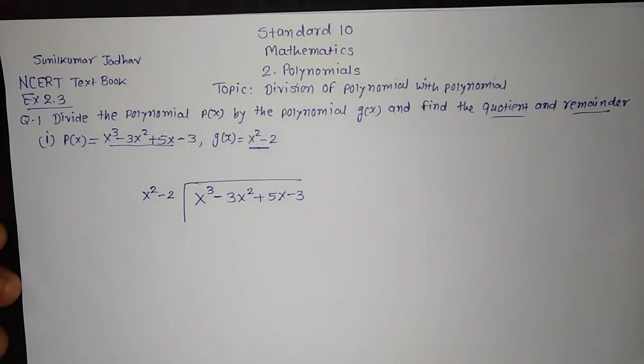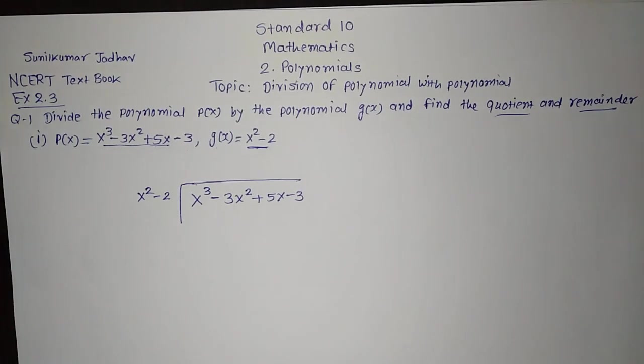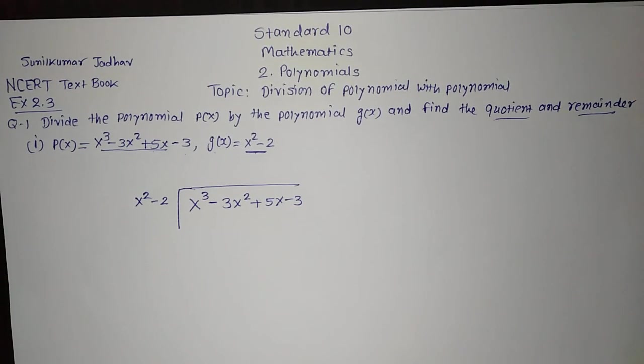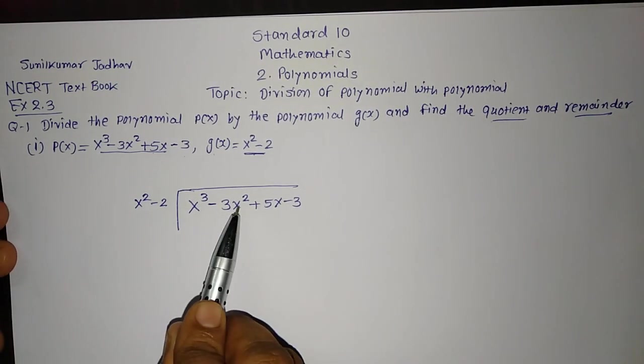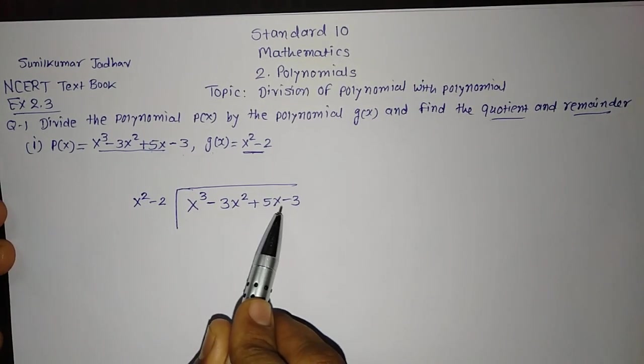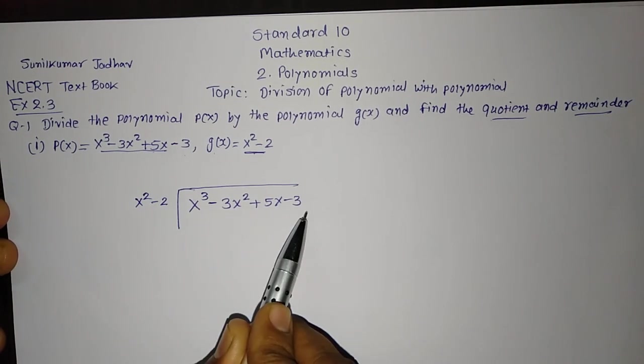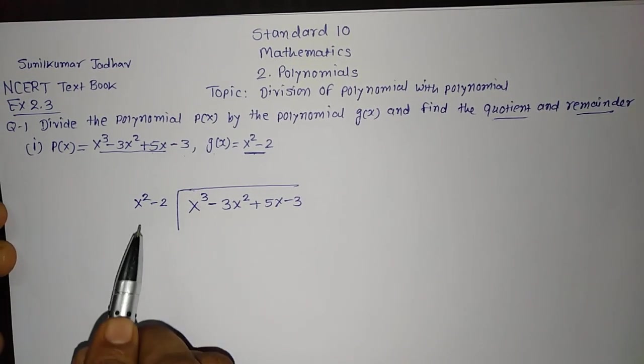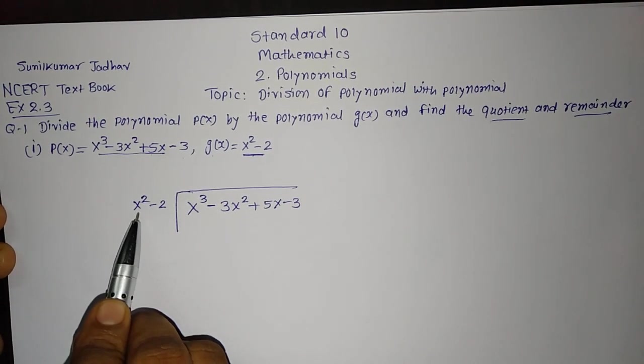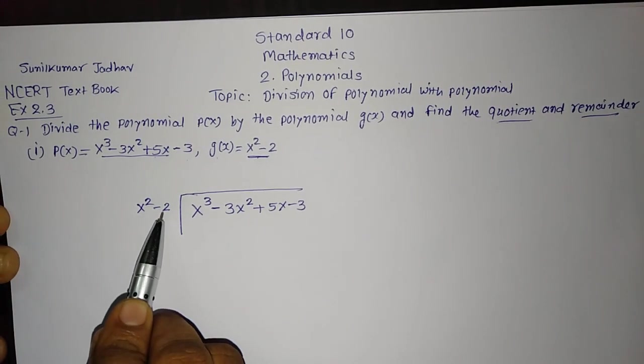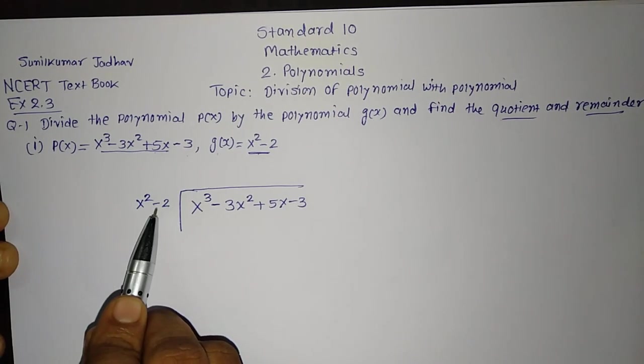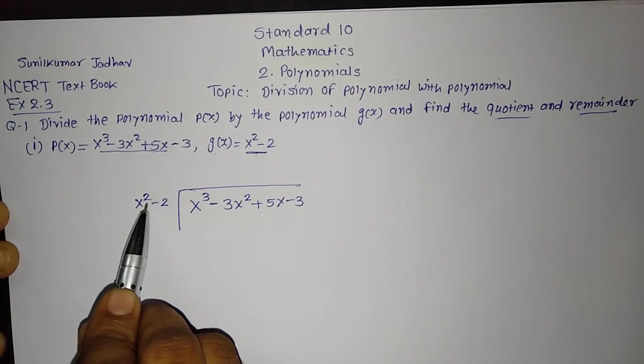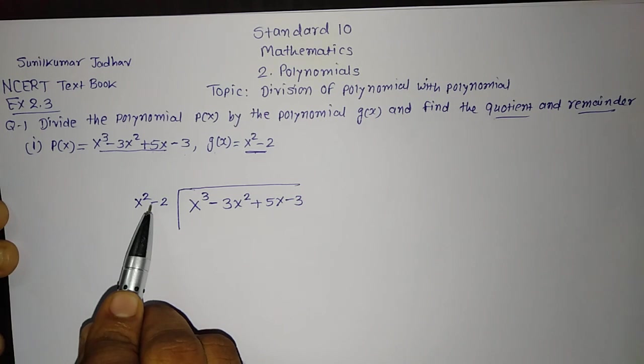While we need to divide, first of all we have to see that polynomial is in decreasing order of its power or not. You can see here it is x³, then x², then x raise to 1 and x raise to 0. So it is in a decreasing order of the power. Similar way here also you can see x²-2. Here you can see one term is missing, that is x² is there, but the term of x raise to 1 is missing.